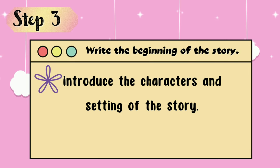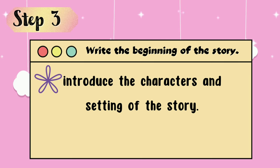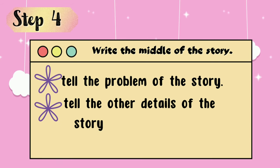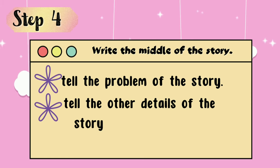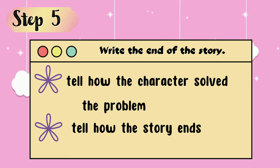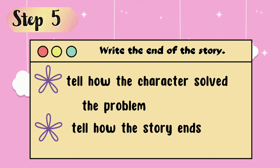Step 3: Write the beginning of the story. In this part, you can introduce the characters and settings of your story. Step 4: Write the middle of the story. You can tell the problem of the story and include other details. Step 5: Write the end of the story. Tell how the character solved the problem and how your story ends. Do you want the reader to think of the possible ending?